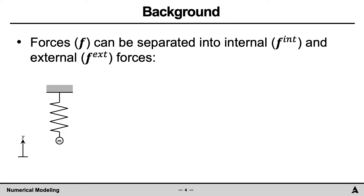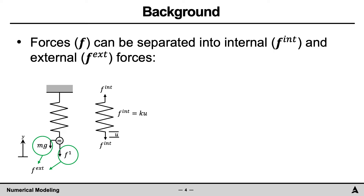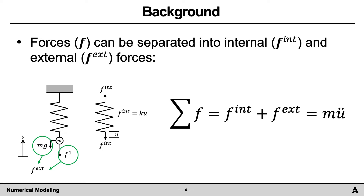As an example, consider a mass connected to a rigid base through a spring. A single force F1 is applied to the mass. In this example, the external force includes: one, the weight of the mass M times G, and two, the applied force F1. The internal force is related to the deformation of the spring U, and is calculated as the stiffness of the spring K times the displacement U. The equation to solve is the sum of the forces, which is equal to the internal force plus the external force, which equals the mass times the second time derivative of the displacement.